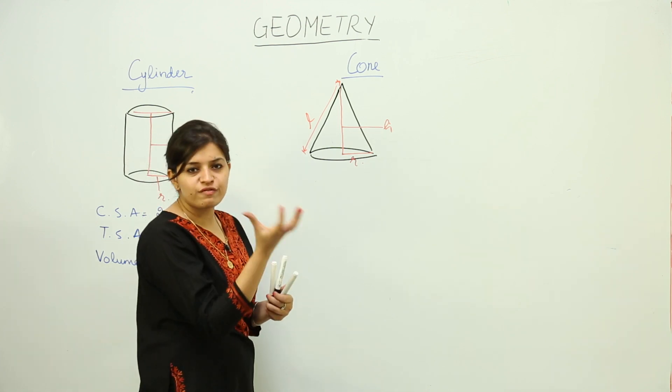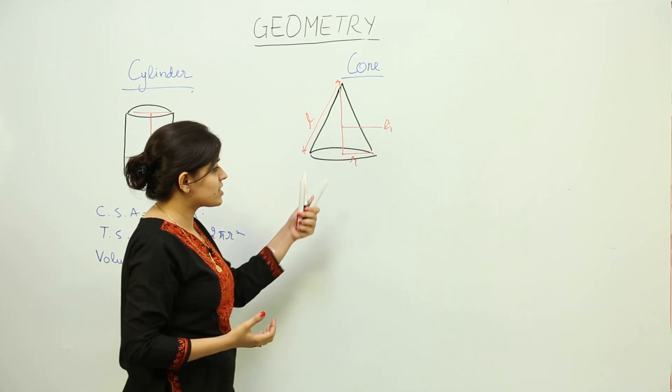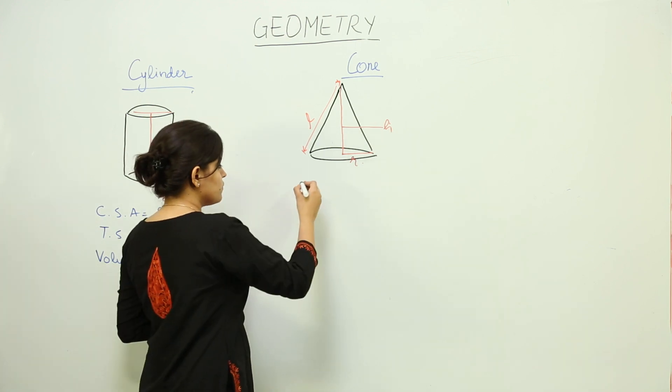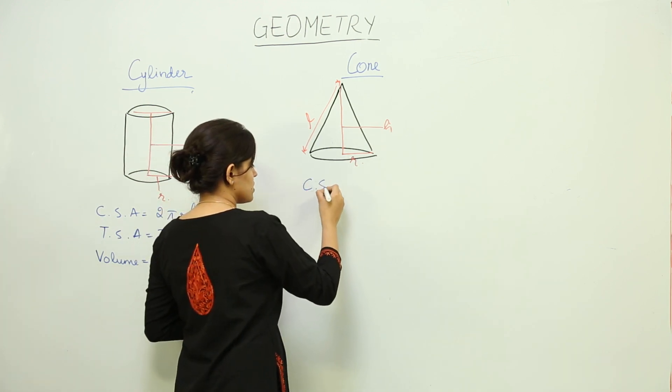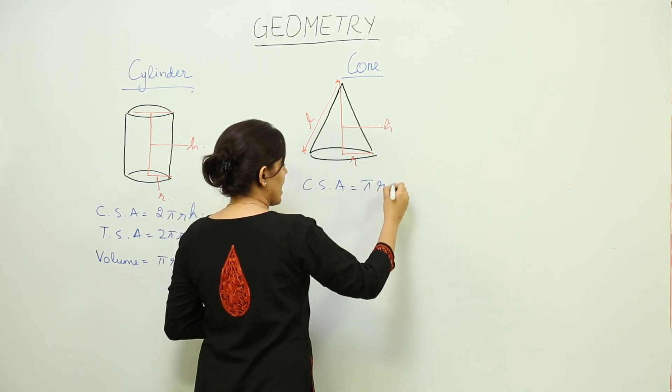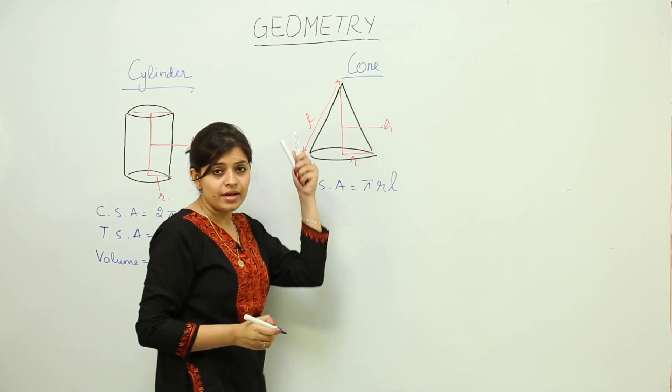Now what is the curved surface area of this cone? That is, again in this case, we do not have to include the lower lid. The curved surface area of this cone is πrL, where L is the slant height.